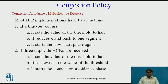In the second reaction, if three duplicate ACKs are received, there is a weaker possibility of congestion. A segment may have been dropped, but some segments after it have arrived safely since three duplicate ACKs were received. This is called fast retransmission and fast recovery. In this case, TCP has a weaker reaction: it sets the threshold to half of the current window size, sets the congestion window to the value of the threshold, and starts the congestion avoidance phase.